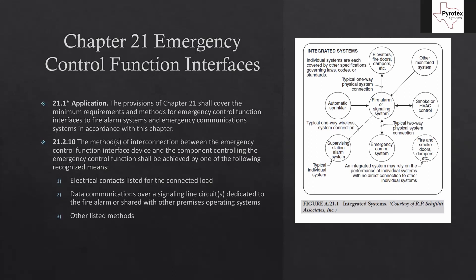If we look at the diagram on the right, we can see a pictograph of how the fire alarm is going to talk to all these other things. The fire alarm is in the center. Down at the six o'clock position there's an emergency communication system with a typical two-way physical system connection, because if your building has an ECS system it's most likely part of the fire alarm. On the right-hand side you see the smoke or HVAC control — that's kind of a two-way communication. We get the supervisory signal from the duct and tell that system to shut down. Most of the time it's two-way: we're sending a shutdown signal after we receive an alarm or supervisory signal from them.